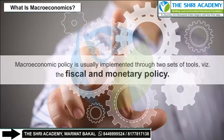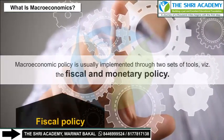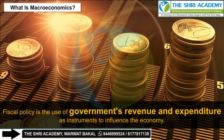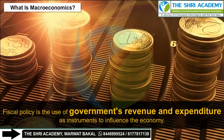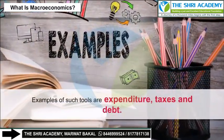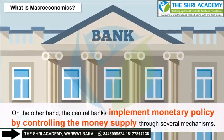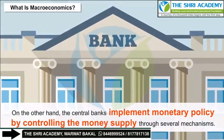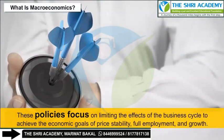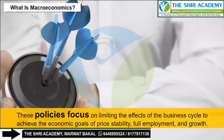Macroeconomic policy is usually implemented through two sets of tools: fiscal and monetary policy. Fiscal policy is the use of government's revenue and expenditure as instruments to influence the economy — examples of such tools are expenditure, taxes and debt. On the other hand, central banks implement monetary policy by controlling the money supply through several mechanisms. These policies focus on limiting the effects of the business cycle to achieve the economic goals of price stability, full employment and growth.